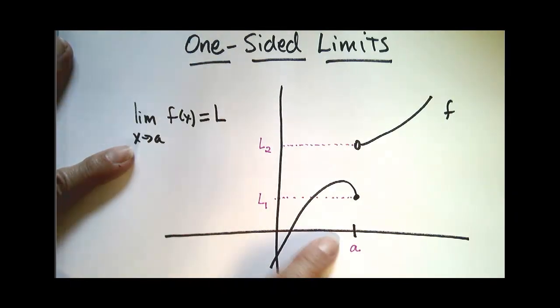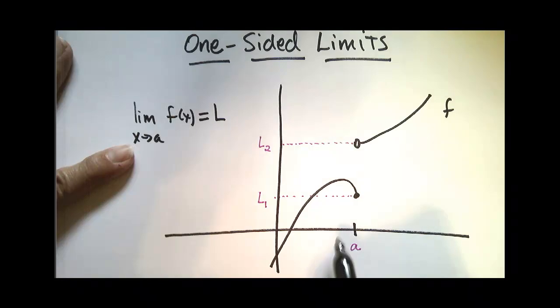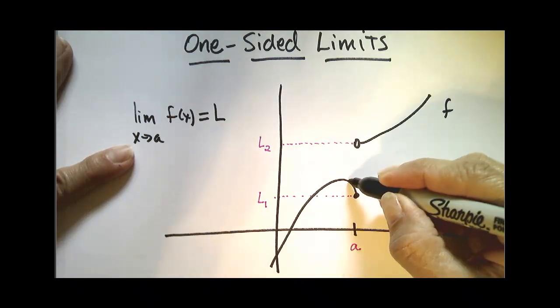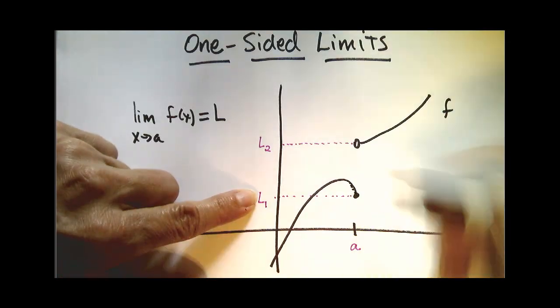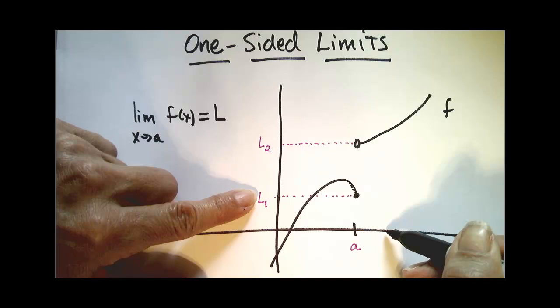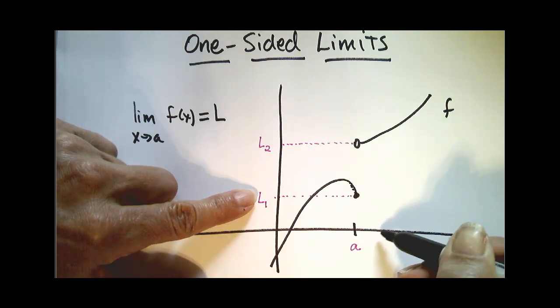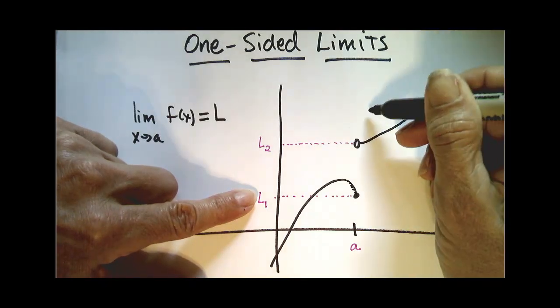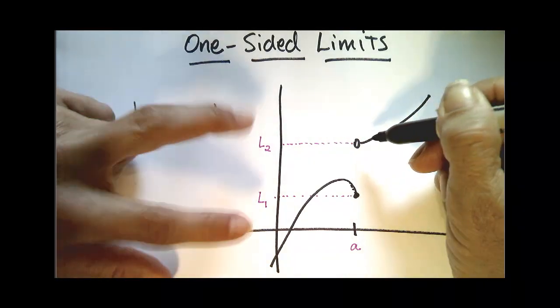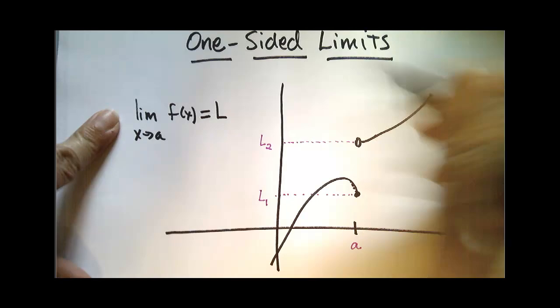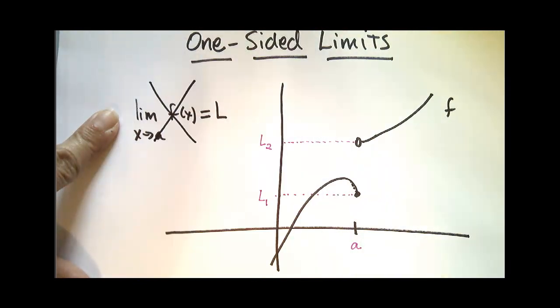If I pick values closer and closer to a from the left, my y values are tending towards L1. If I pick values to the right of a, closer and closer to a, my y values are tending towards L2. Since these are not the same, we cannot say this statement.